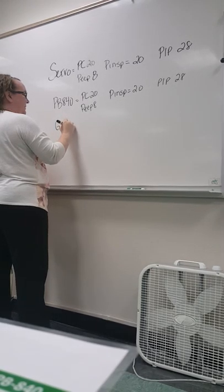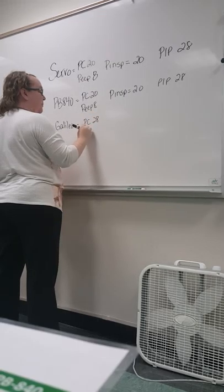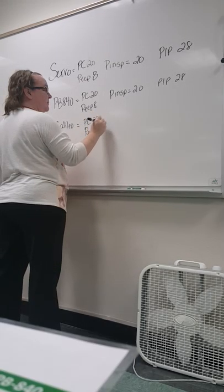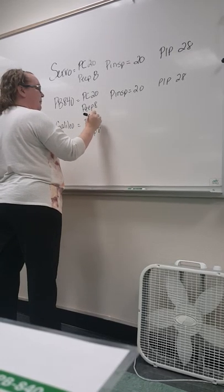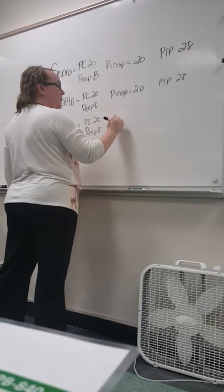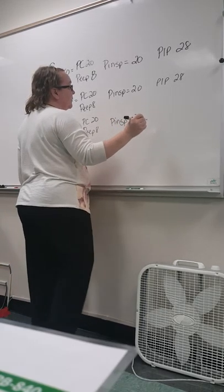Galileo? Same too. Pressure control is 20, PEEP of 8. 20. I had 28 on my brain. What's your P-inspiratory going to be set at? 20. And what's your PEEP going to equal? 20.